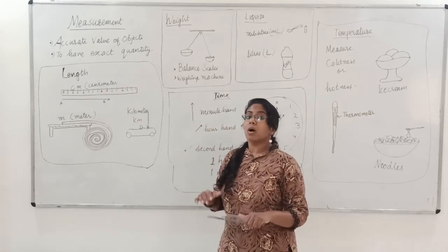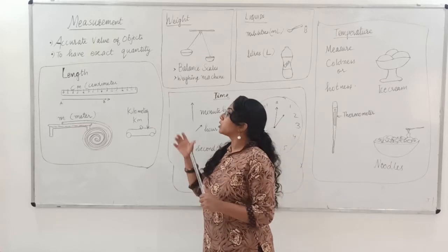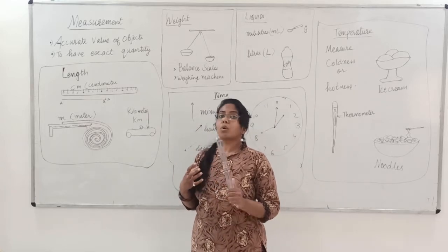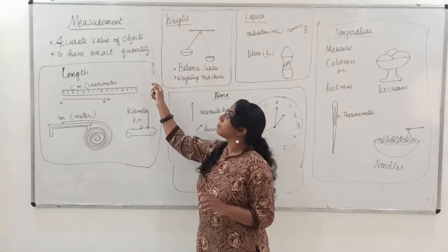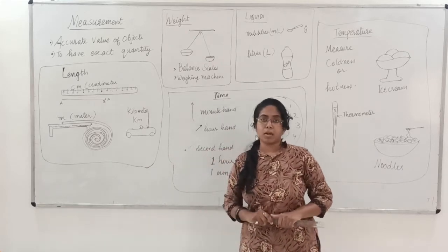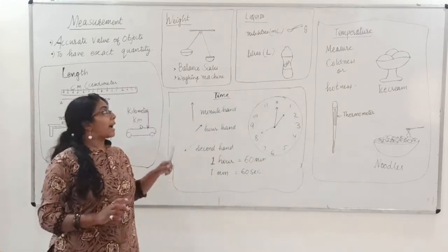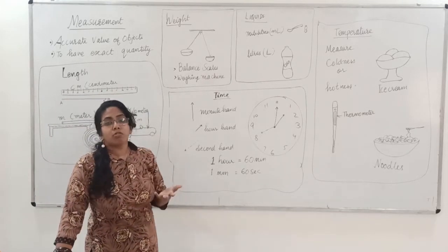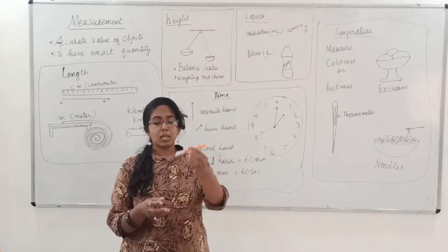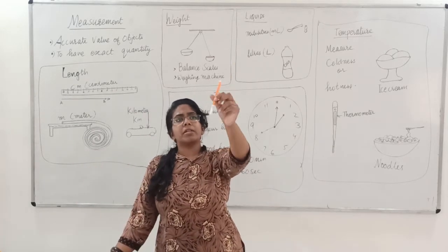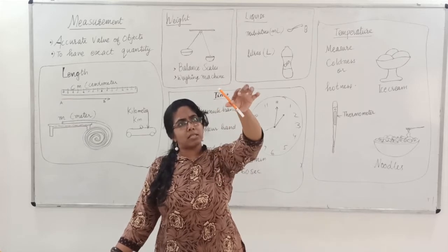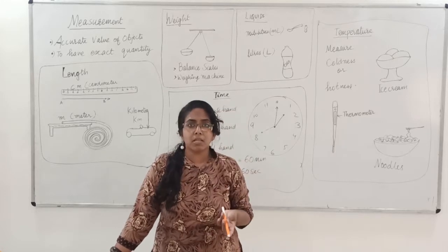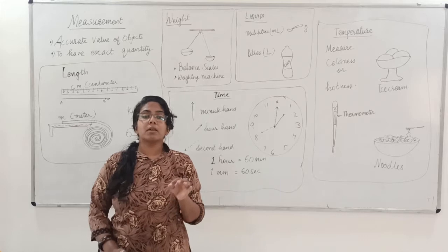So, what they used to do, they used to later on provide us with different things which are present on the board. For different objects, we are going to now learn about measurement. Why is measurement required? Measurement is required for accurate value of objects. Now, what is the meaning of accurate value of objects? For that we require measurement.